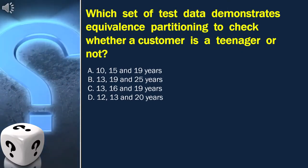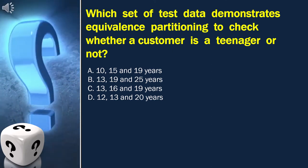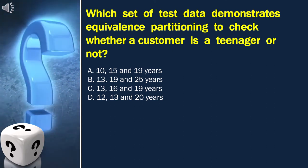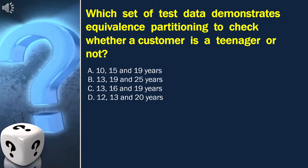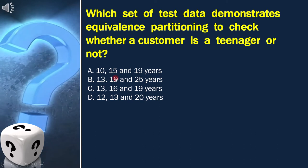Here, the question is: which set of test data demonstrates equivalence partitioning to check whether a customer is a teenager or not? And these are our options.